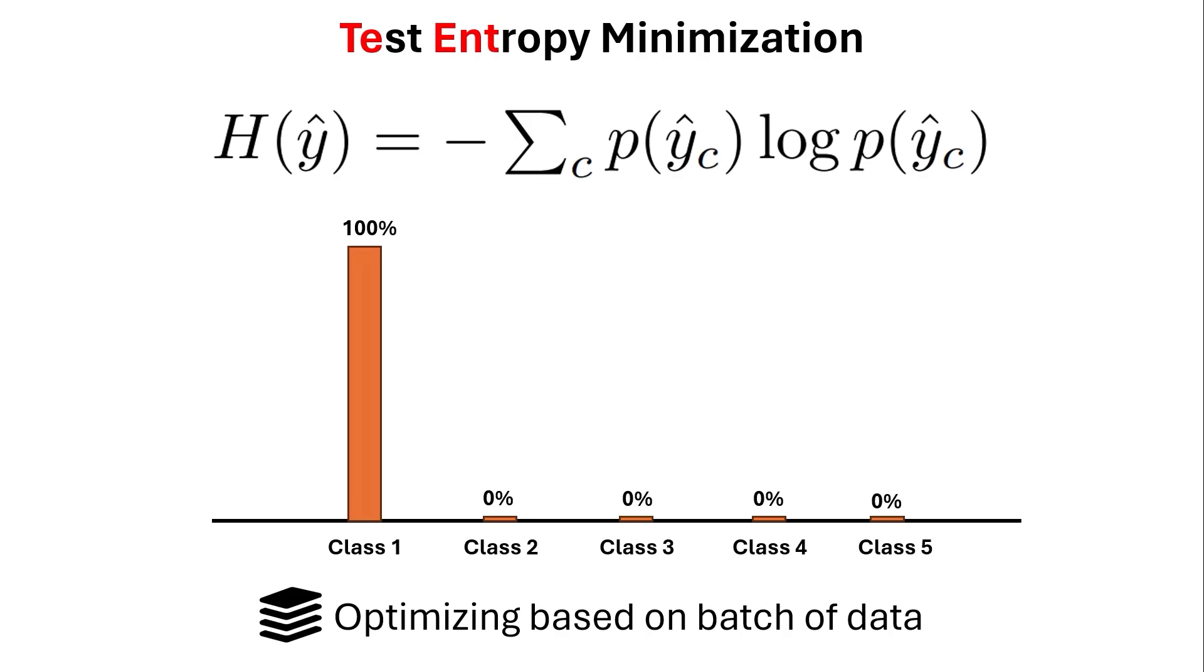But here comes my question that what if in that batch of data I also have a scenario that all of them belong to class 1 and I want to minimize entropy and I guess in that case the class 1 goes to 100% all the others to 0 and it should be problematic. What do you think? If you know the answer, feel free to add it on the comment. I'll be happy to read it. But anyway, this is the model collapse.